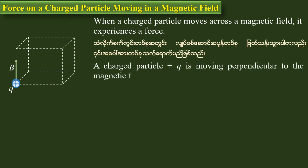The charge is positive, plus Q is moving. How can it move through the magnetic field with velocity V? That's the charge and the velocity. The force will be the same.